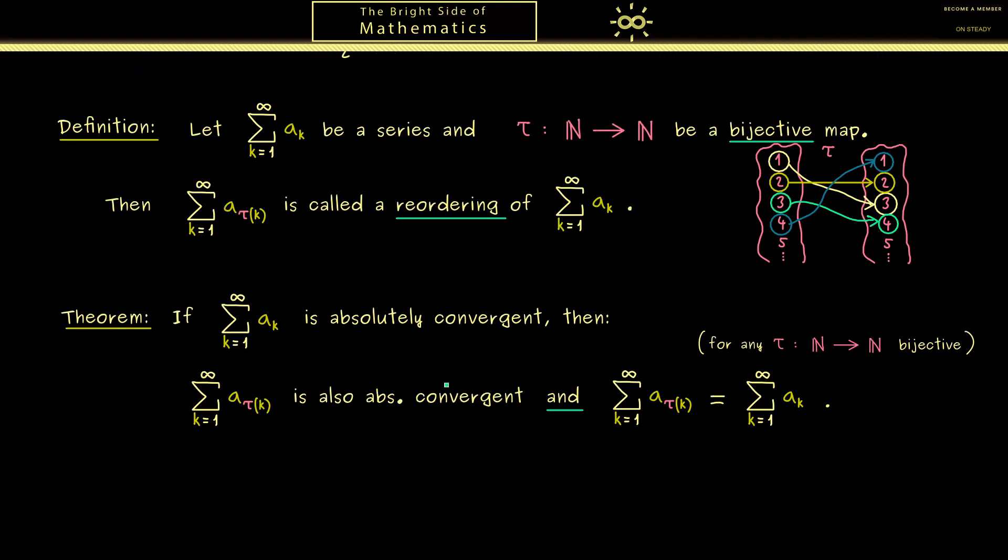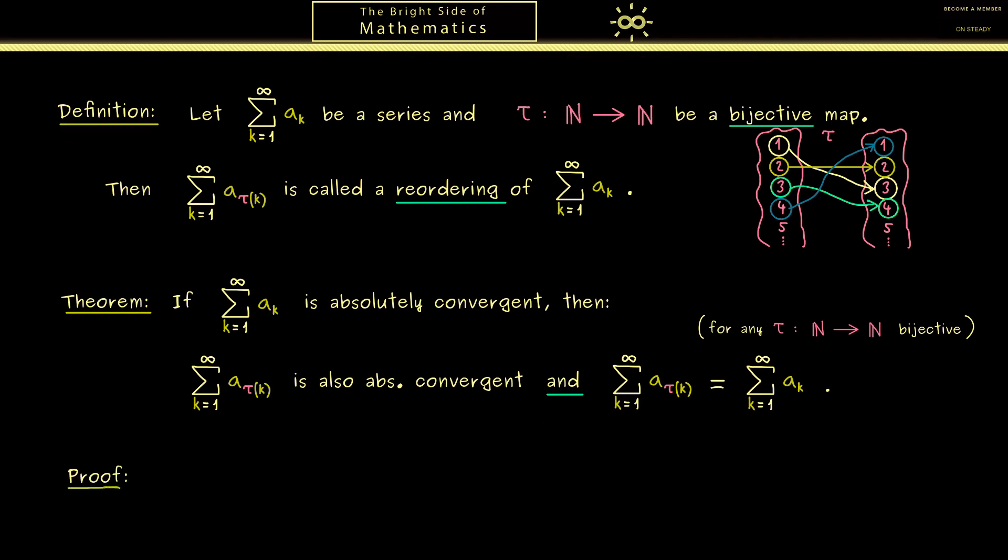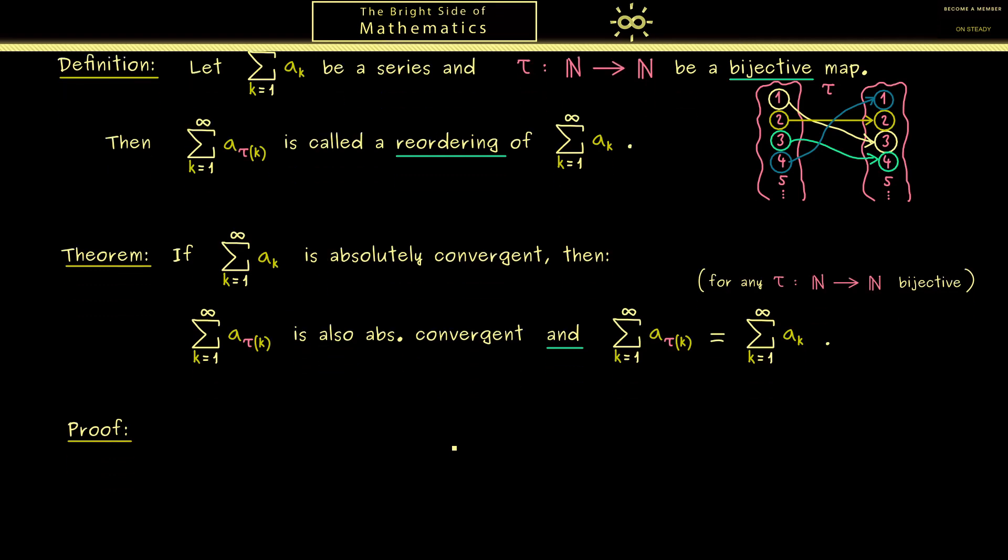Now I think we are able to prove such a statement. First, please recall that being absolutely convergent means that this series is still convergent when you put the absolute value bars around ak. For this convergent series, I want to use the Cauchy criterion. This means that for a given epsilon greater than 0, the Cauchy criterion implies there exists a capital N, which we call N1 for the moment, such that for all indices n, m afterwards we have that this finite sum is less than epsilon. Using this, we can show on the one hand that this series is also absolutely convergent, and on the other hand that this equation holds. Both proofs work similarly, therefore I just show you that the limits coincide because that is just more interesting.